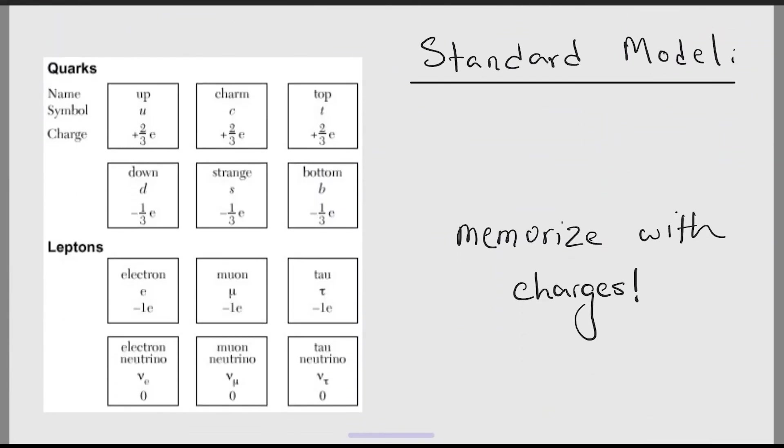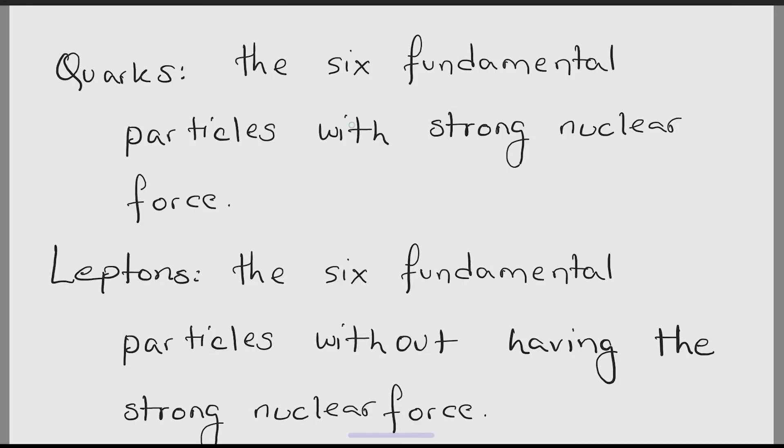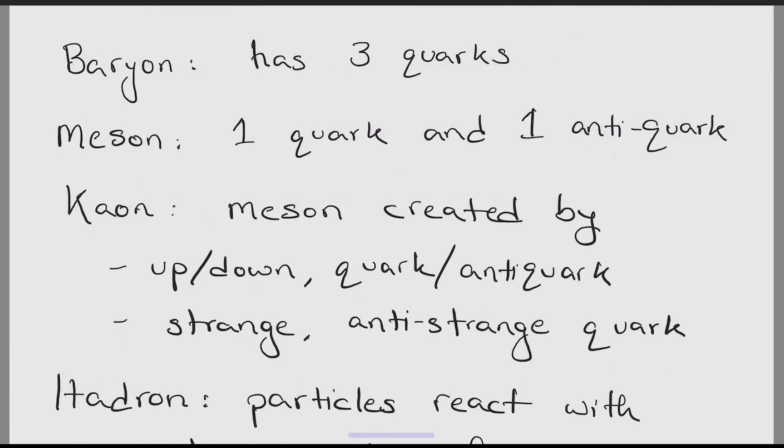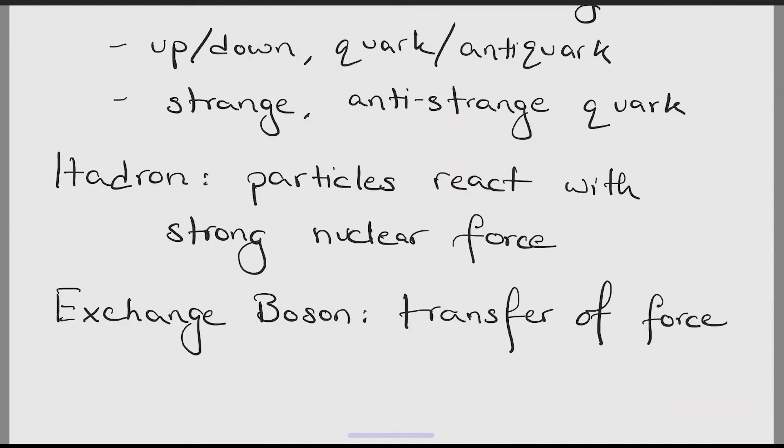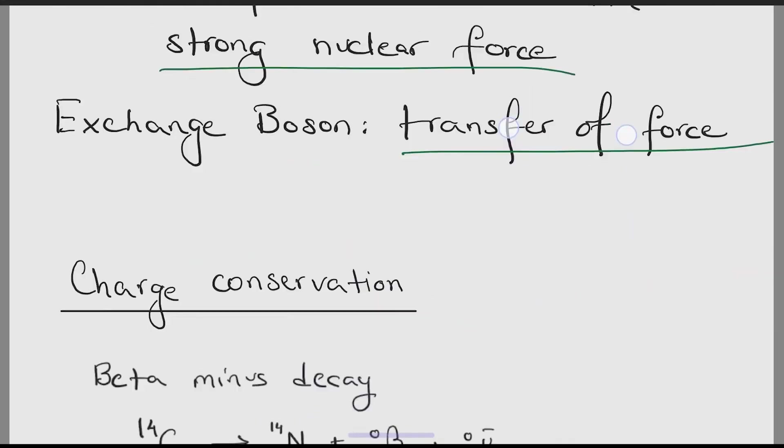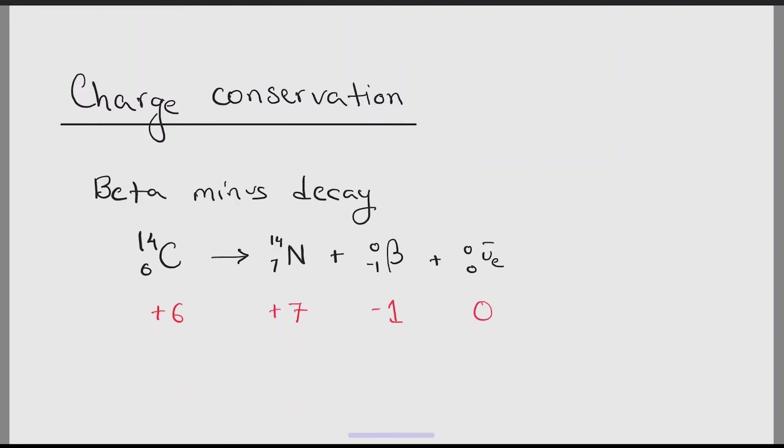The next topic is the standard model of particles. Here we have to memorize the names and the charges of the subatomic particles. Here are some new keywords. Quarks: the six fundamental particles with strong nuclear force. Leptons: the six fundamental particles without any strong nuclear force. Baryon: it has three quarks. Meson: it has one quark and one anti-quark. Kaon is a meson created by up or down quark or anti-quark, strange and anti-strange quark. Hadron particles react with strong nuclear force. Exchange boson means transfer of force. The charges must be conserved. Here you can see the total amount of charge on the left hand side is the same as the total amount of charge on the right hand side. We can use simple addition and subtraction for this case.